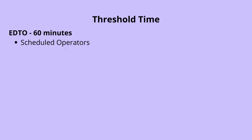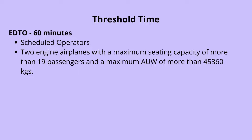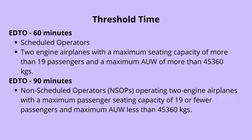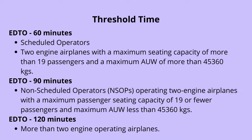According to DGCA, the threshold time for EDTO is 60 minutes for scheduled operators operating two-engine airplanes with a maximum seating capacity of more than 19 passengers and a maximum all-up weight of more than 45,360 kg. The threshold time for a non-scheduled operator operating a two-engine airplane with a maximum seating capacity of 19 or fewer passengers and a maximum all-up weight of less than 45,360 kg is 90 minutes, whereas the threshold time for more than two-engine airplanes is 120 minutes.